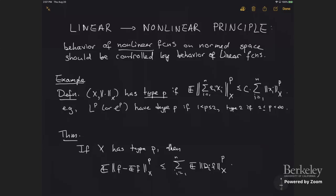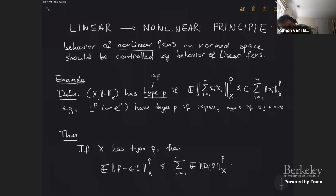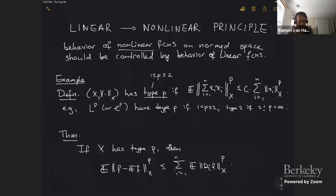A good point: spaces can only have type P if P is between 1 and 2. Every space has type 1, because for P=1 the inequality is just the triangle inequality — we say a space has trivial type in that case. Type 2 is Hilbert space, and you cannot have more than type 2, because in every linear space you can take a one-dimensional subspace that behaves like the scalar case, which has type 2, so you can never do better than that.